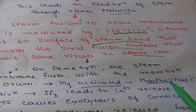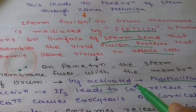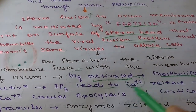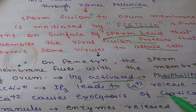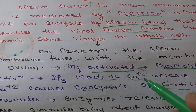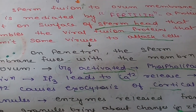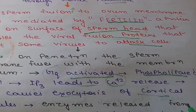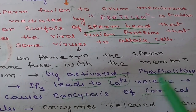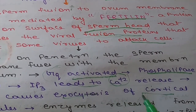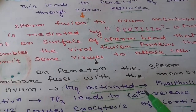Activation of GQ leads to activation of phospholipase C, which leads to the formation of IP3, and IP3 leads to calcium release. This calcium causes exocytosis of the cortical granules. The cortical granules contain certain enzymes which, when released, bring about changes in ZP3 and ZP2 so that other sperm cannot bind to ZP2 and ZP3. This mechanism helps to prevent polyspermy.